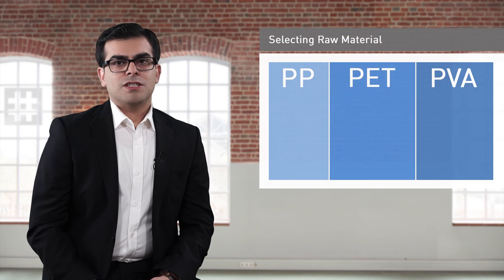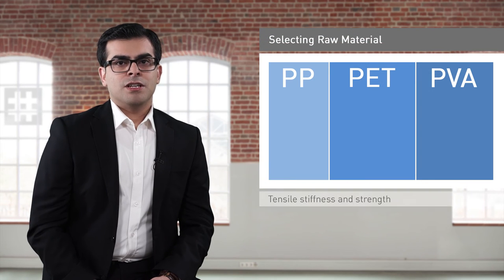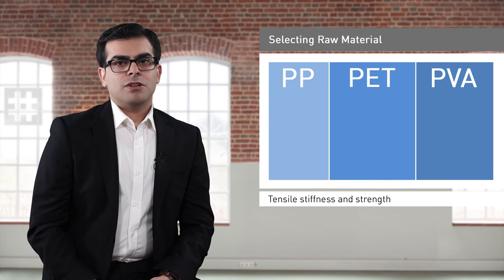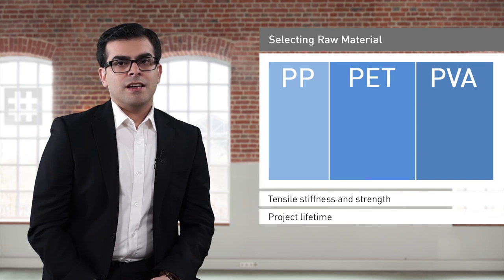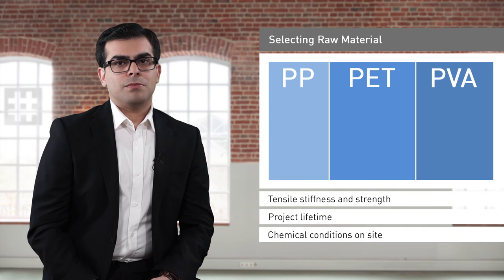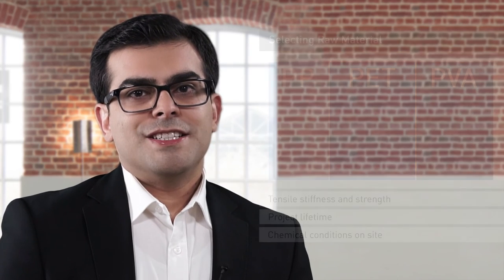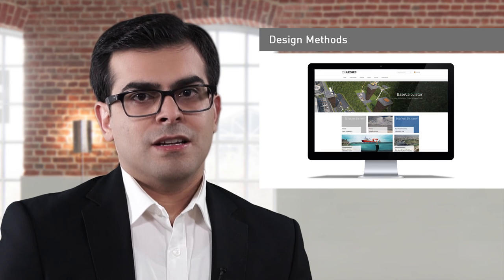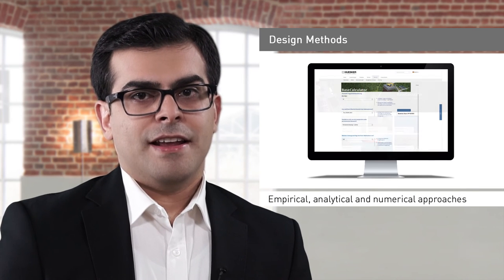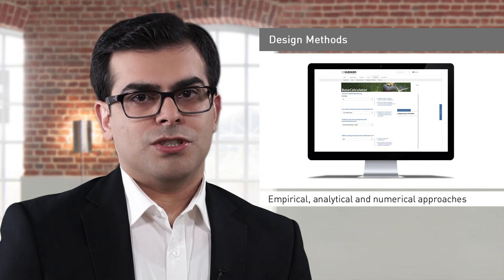The type of raw materials used in geosynthetic reinforcements should be chosen in accordance with the desired tensile stiffness and strength, the expected lifetime of the project, as well as the chemical properties of the soil and groundwater with respect to their acidic or alkaline characteristics. In order to design the base reinforcement for paved or unpaved systems, different empirical, analytical and numerical approaches are available.